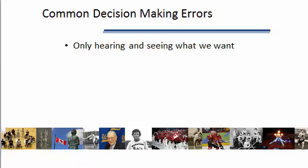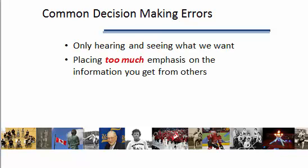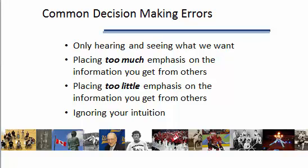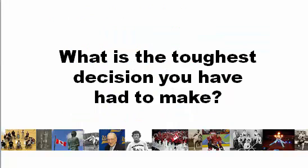When decisions are made, they're not always perfect. There are a number of common decision-making errors that present themselves. Only hearing or seeing what we want is an obvious potential error. Placing too much emphasis on the information we get from others could be an error, or on the flip side, placing too little emphasis on the information we get from others. And at the end of the day, ignoring your intuition — that gut reaction — can be a big error. So what's the toughest decision you've had to make? Often it could be a life decision, or a decision where we're challenged to look internally and think about our values and our ethics. Stay tuned for more on ethical decision-making.